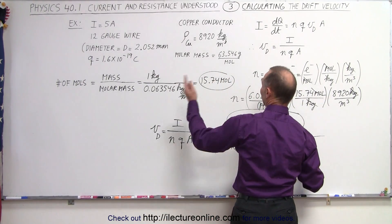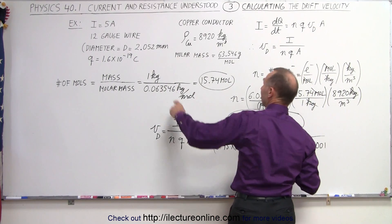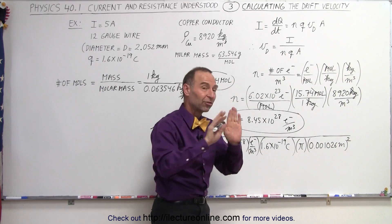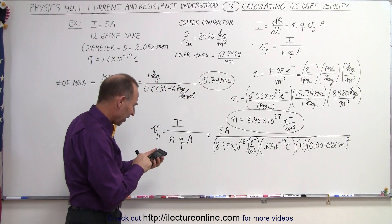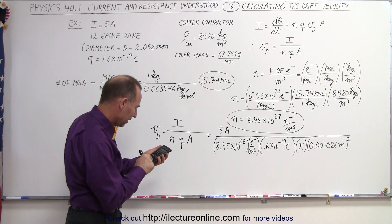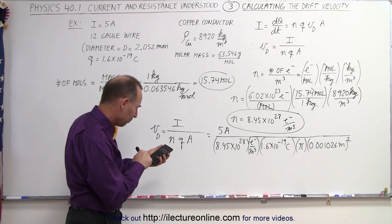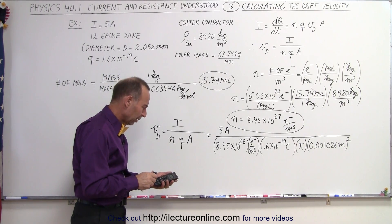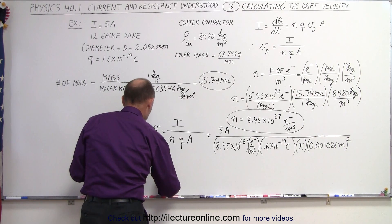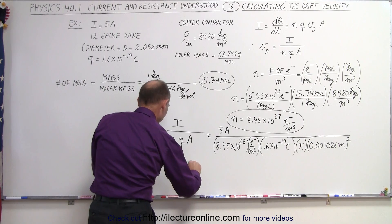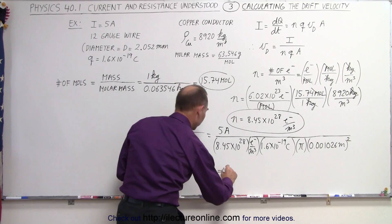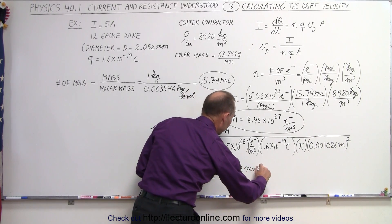We have to convert the radius to meters, so it would be 0.001026 meters, and then we square that for the cross-sectional area. So that gives us 5, divided by 8.45×10²⁸, divided by 1.6×10⁻¹⁹, divided by pi, divided by 0.001026 squared. The result is 1.12 — so v_d equals 1.12 times 10 to the minus 4 meters per second. When we convert that to millimeters, this would be equal to 0.112 millimeters per second.